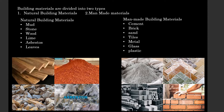Building materials are mainly divided into two types: one is natural building materials and second is man-made materials. Natural materials include mud, stone, wood, lime, asbestos and leaves, whereas man-made materials include cement, brick, tiles, metal, glass and plastic. In today's video we are going to be discussing about man-made materials.